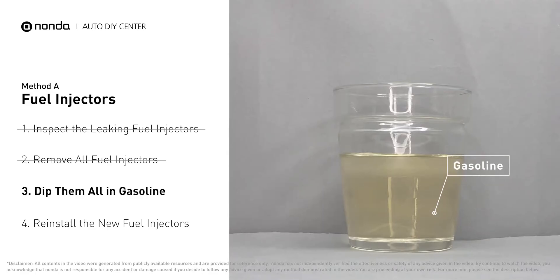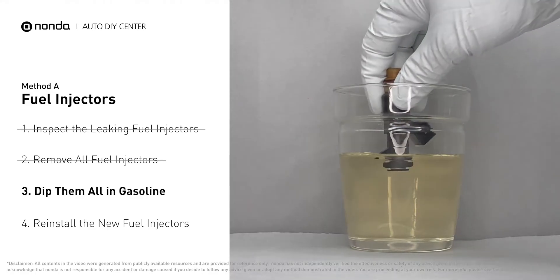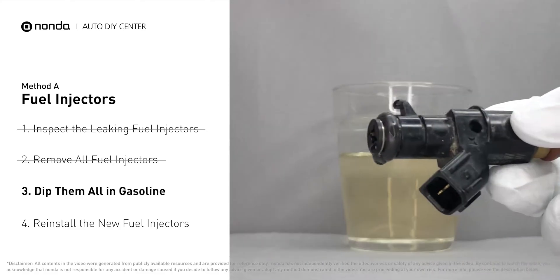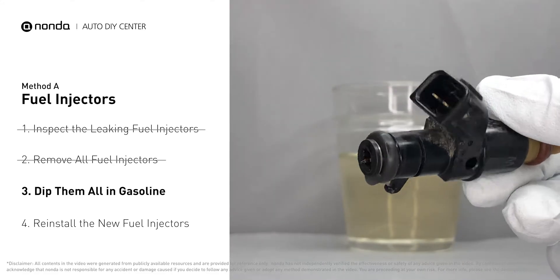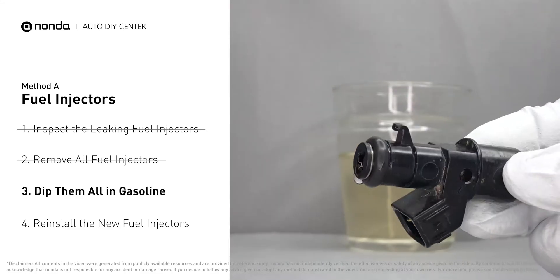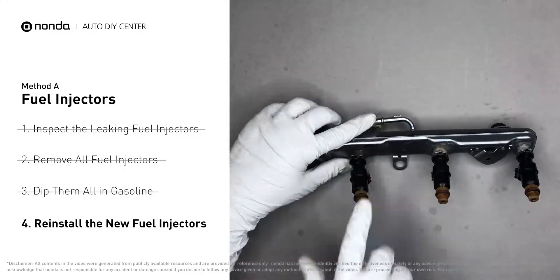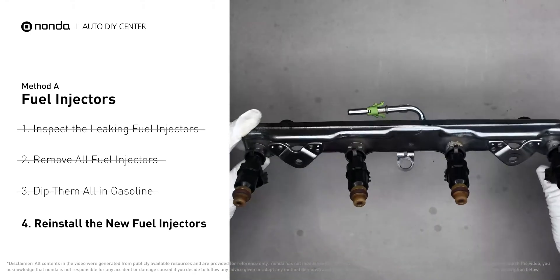In order to prevent leaking, get some gasoline, put it in a cup, and then dip the new fuel injector into it so the seals get wet with gasoline — this way it will go in and won't leak. After that, just slide all the new fuel injectors in.